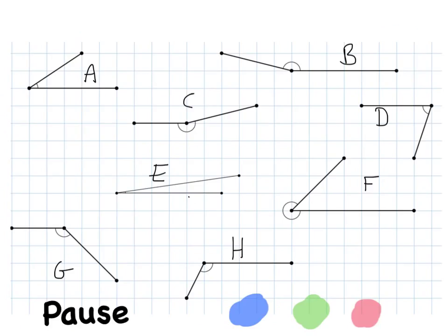Pause this video now and have a go at identifying the different types of angles you can see here. Maybe in your books, create a list of acute angles, obtuse angles, and reflex angles, and write the letters for each section in there. Away you go.